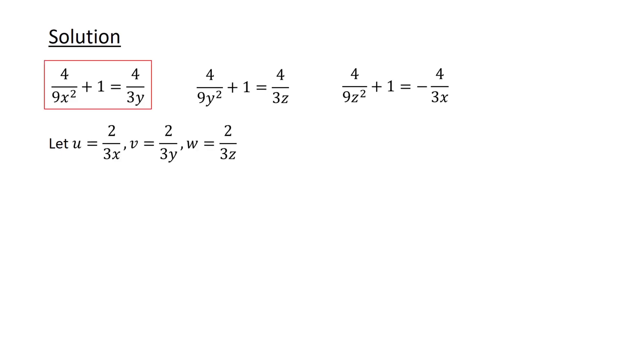For the first equation, the first term on the left-hand side of the equation is 2 over 3x², while the term on the right-hand side is 2 times 2 over 3y. Therefore, we have u² plus 1 is equal to 2v.